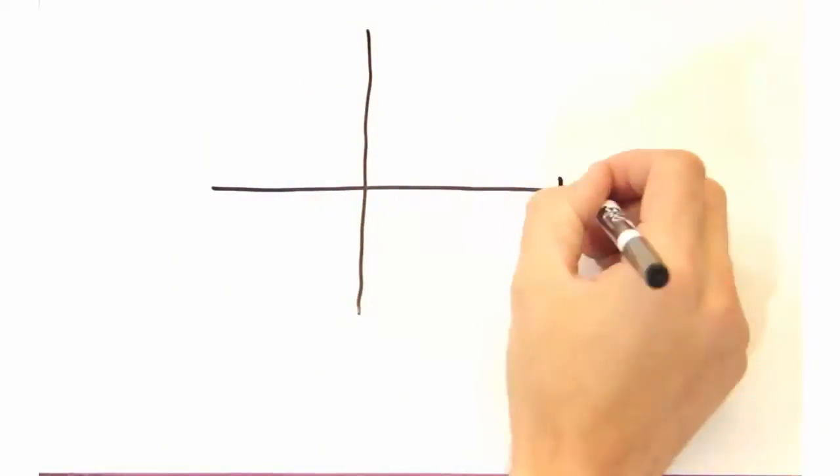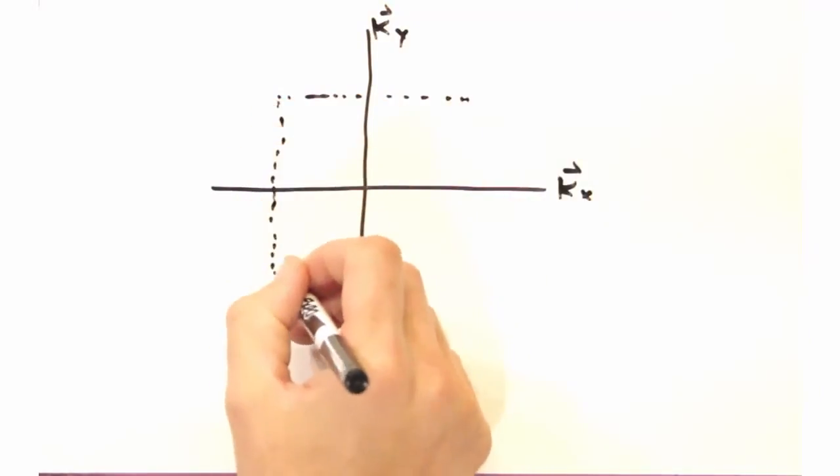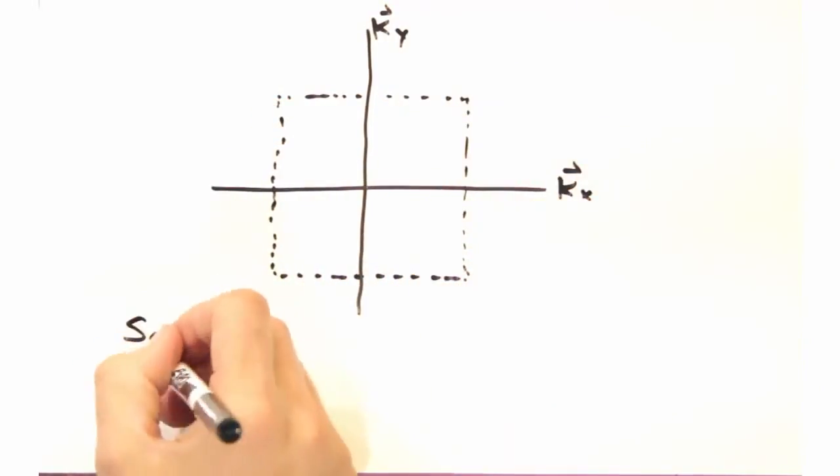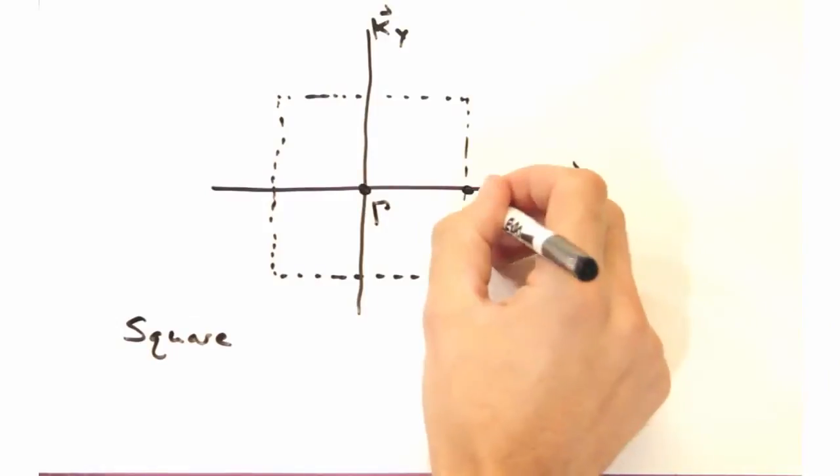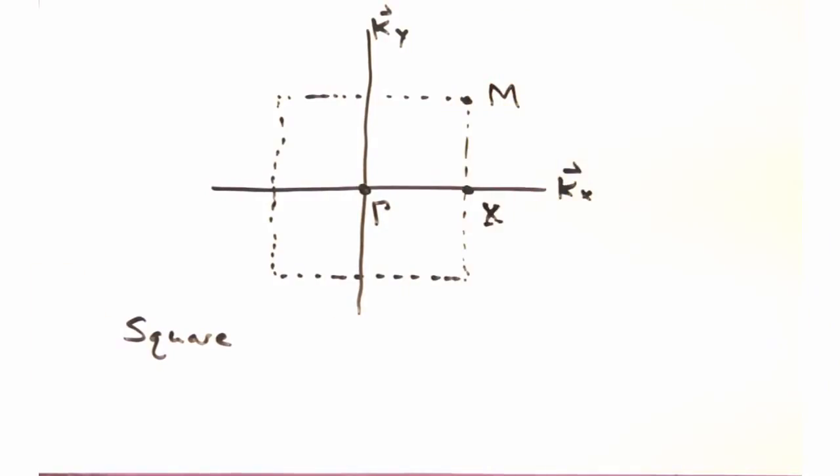There is, but we're going to need to introduce some vocabulary first in labeling our first Brillouin zone. For a square lattice, we're going to have a square Brillouin zone with our axis of Kx and Ky as so. Gamma's our origin at Kx, Ky equals 0, X is at the right edge, and M is at the corner.